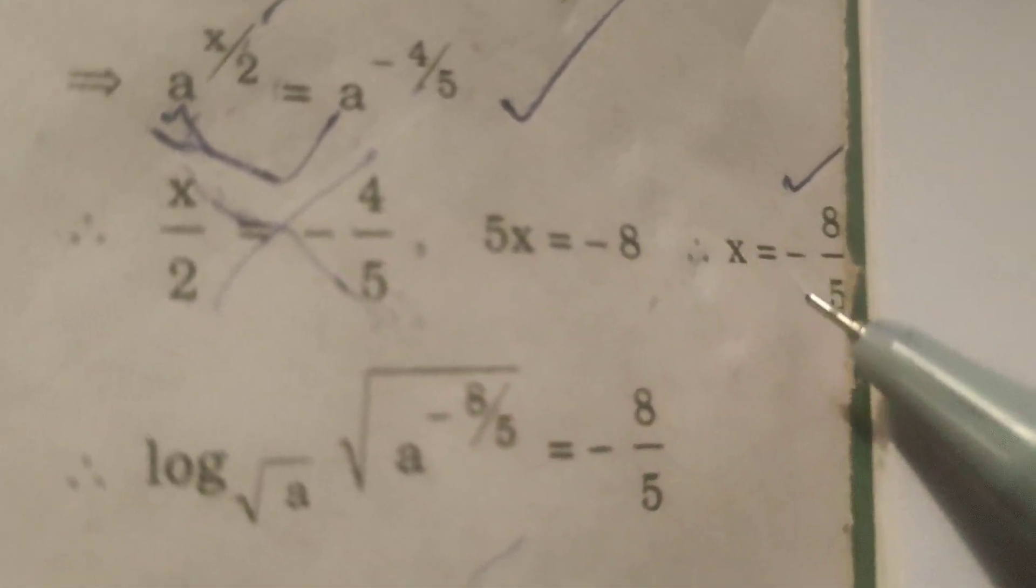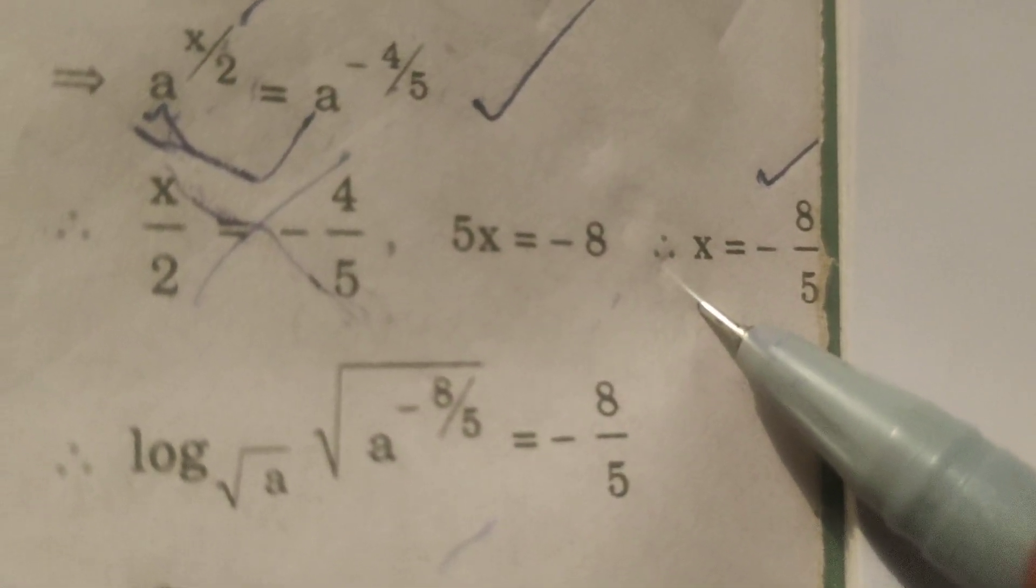After that, cross multiplication will get 5x equals to minus 8. x equals to minus 8 by 5.